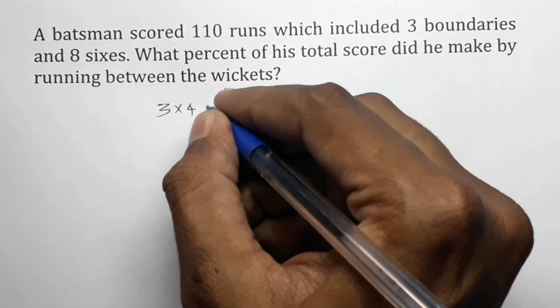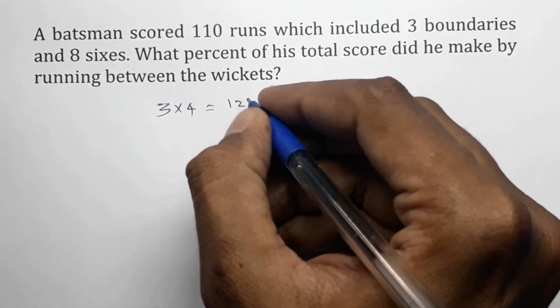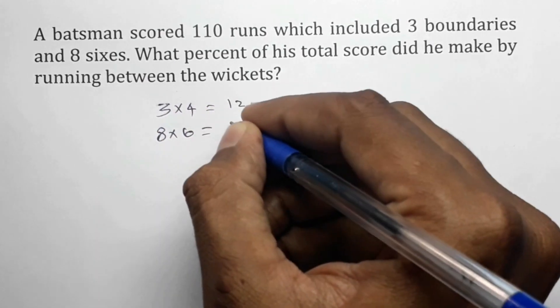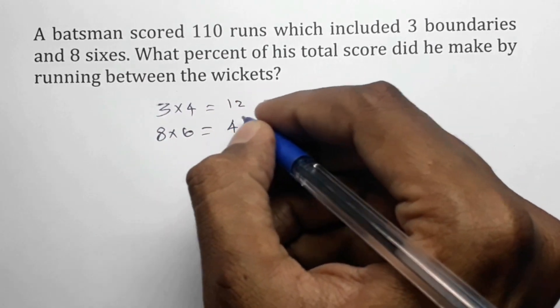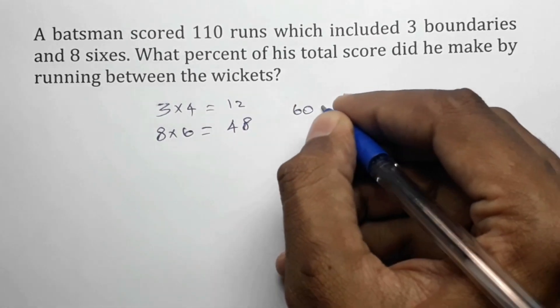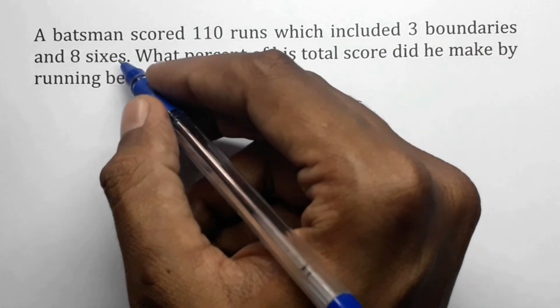3 times 4 equals 12 runs by boundaries, and 8 times 6 equals 48 runs by sixes. So total of 60 runs by boundaries and sixes.